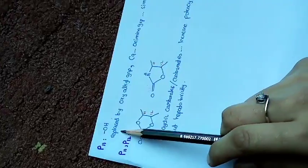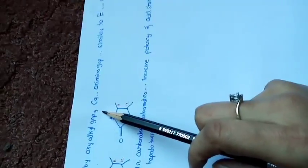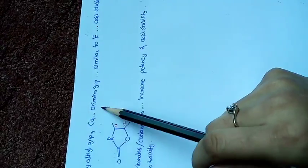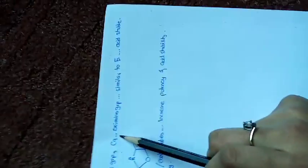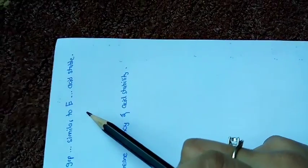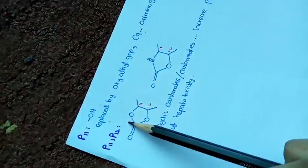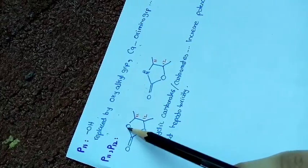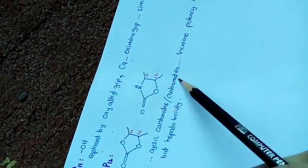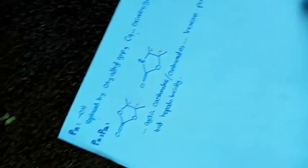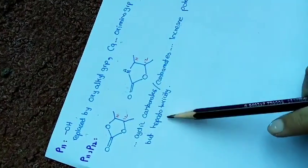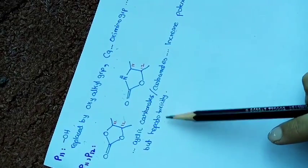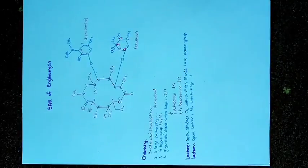At position 11, we have a hydroxyl group. If this hydroxyl group is replaced by an oxyalkyl group with an oxyamine group present at position 9, the new compound formed is similar to erythromycin but acid stable. Between positions 11 and 12, if cyclic carbonates or carbamates are formed, the compounds have increased potency and acid stability, but these new compounds will be hepatotoxic.